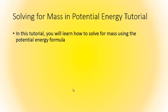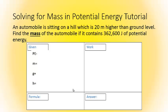So let's take a look at our example problem. An automobile is sitting on a hill, which is 20 meters higher than ground level. Find the mass of the automobile if it contains 362,600 joules of potential energy.